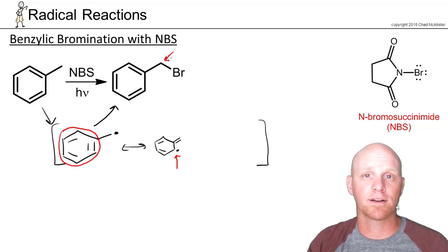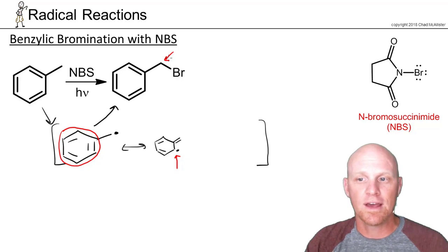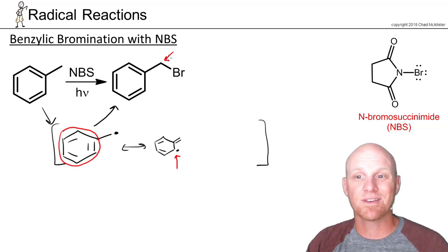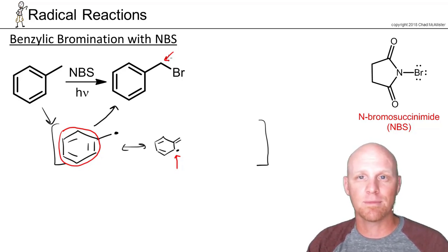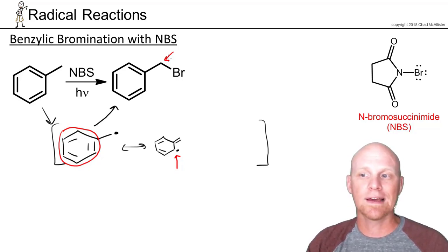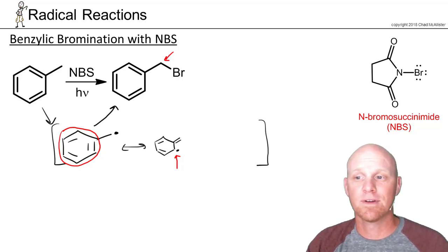That way you still have an aromatic product. The aromatic product is so much lower in energy that it's thermodynamically favorable. So even though there is resonance stabilizing the benzylic radical, you don't have to worry about any of the resonance structures leading to unexpected products like we did with allylic bromination. Not a problem to worry about with benzylic bromination.